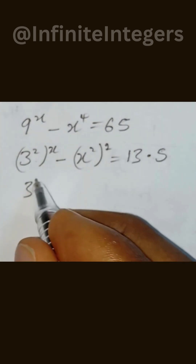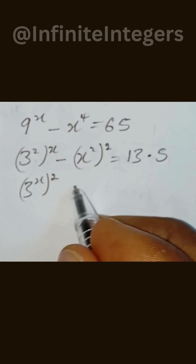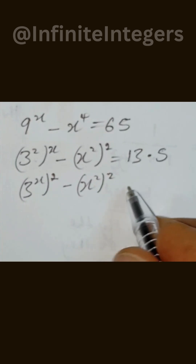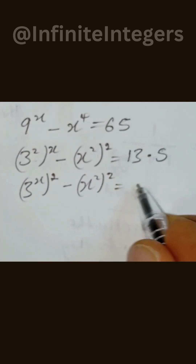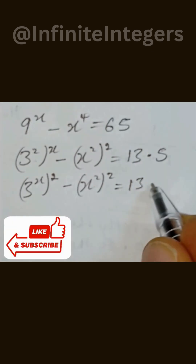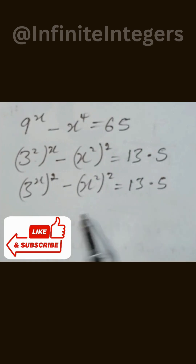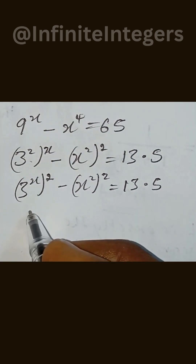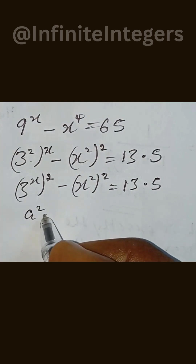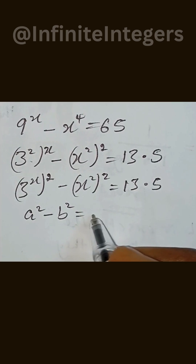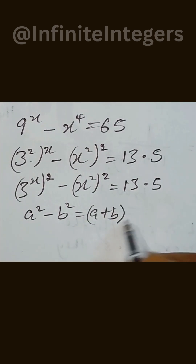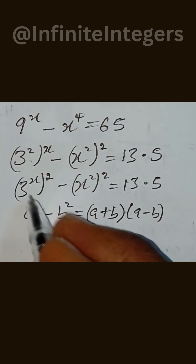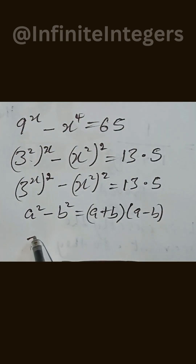We can write this as 3 to the power of x, then to the power of 2, minus x to the power of 2, then to the power of 2, and this is equal to 13 multiplied by 5. Since this appears to be in the form of a difference of two squares — which implies a squared minus b squared equals a plus b times a minus b — we express it in this form.